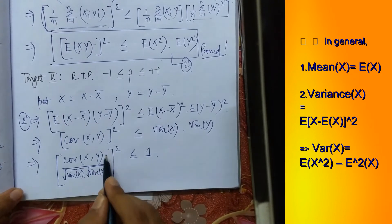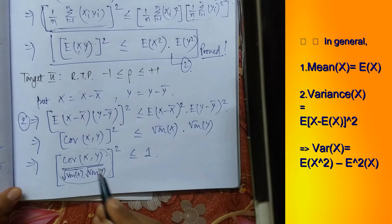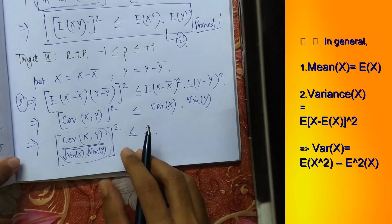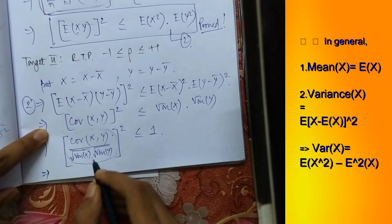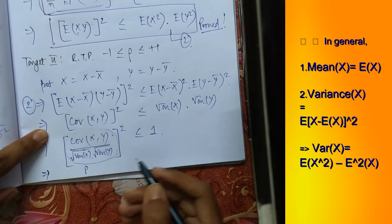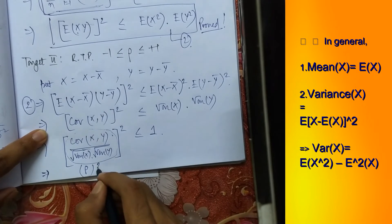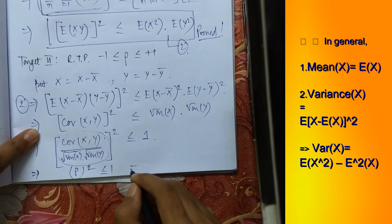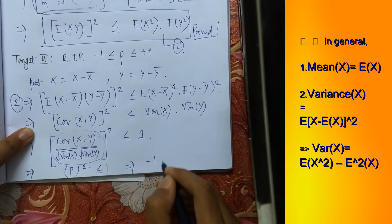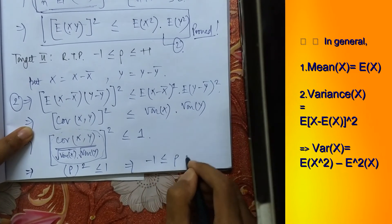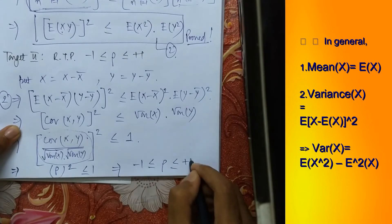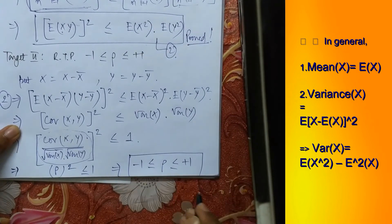This part represents the correlation coefficient of x comma y. So we write in here rho as we have denoted, and this will be squared, less than equals to 1. This gives us that minus 1 is less than equals to rho which is less than equals to plus 1. Hence we have another proof done and dusted.